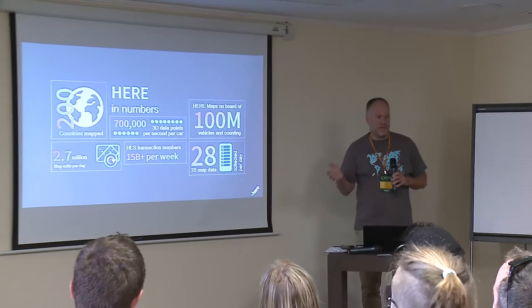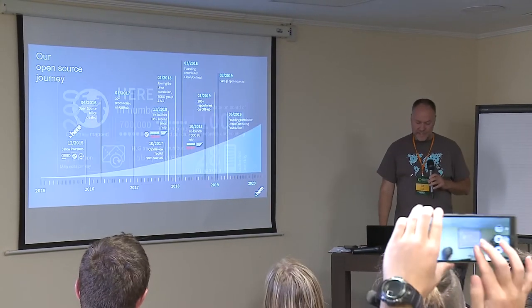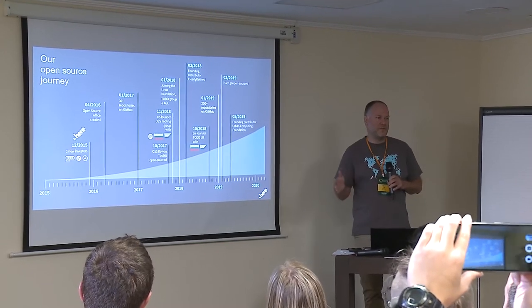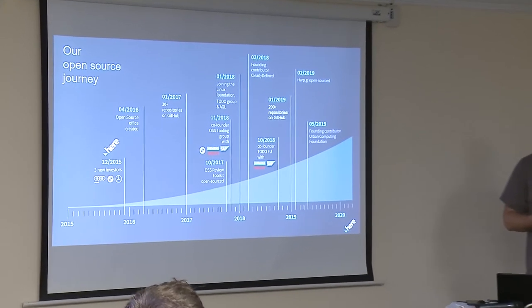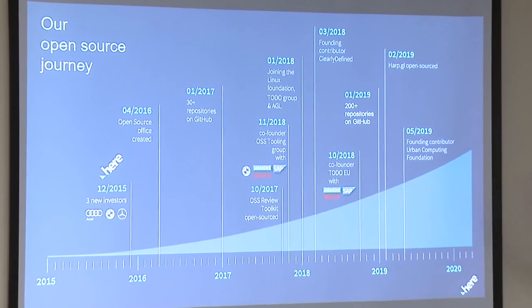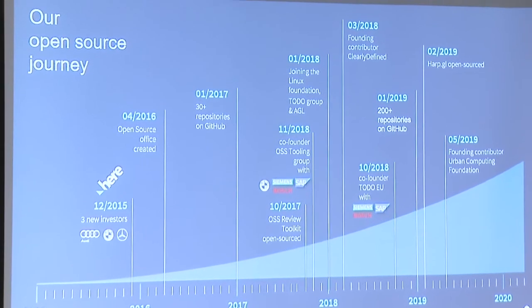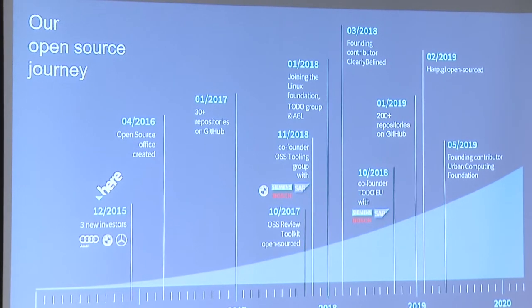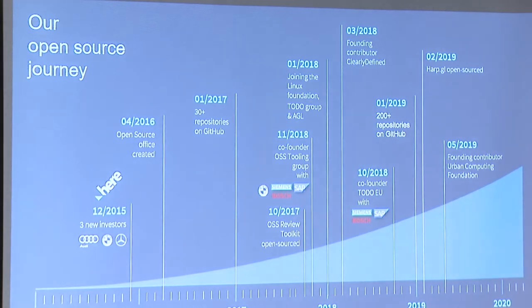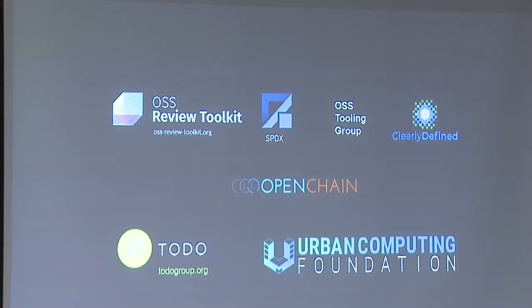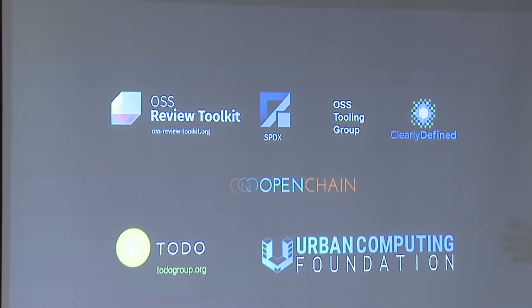For those who haven't heard about HERE: we are a company primarily building map data for industrial processes, essentially doing sensor data, having cars out in 200 countries driving around and updating the map. More recently we've been bought by car manufacturers, who have been very supportive of our journey toward becoming more open source and more involved in the community.